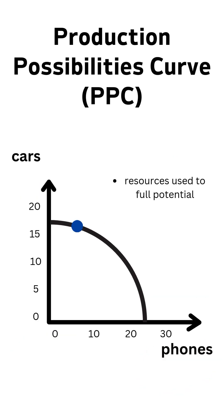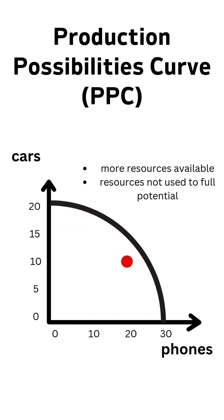Next is the production possibilities curve. It shows what an economy can produce with its resources. Move along the curve and you're shifting what you do with the resources. If the curve expands or contracts, it means your amount of resources changed, and being on the inside means you aren't using all that you have.